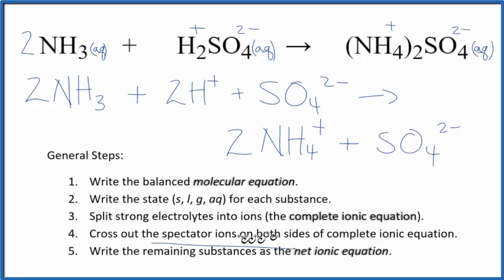Now we can cross out spectator ions. They're on both sides of the complete ionic equation. When I look, the only thing I see that's the same in the reactants and the products is the sulfate ion here. So I'm going to cross that out. It hasn't changed, so we're not interested in that. What's left is our net ionic equation for NH3 plus H2SO4.